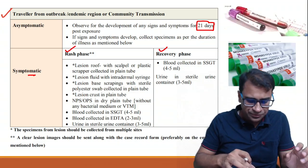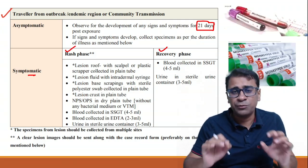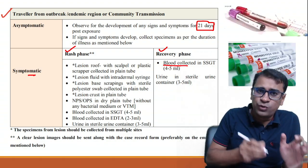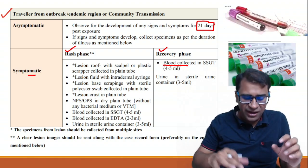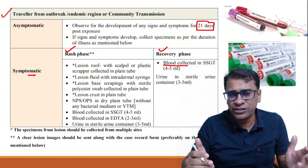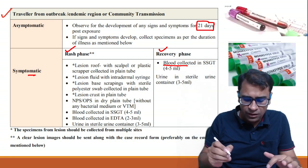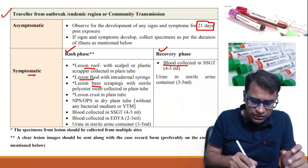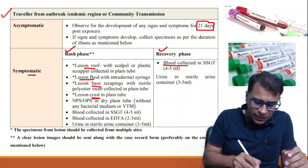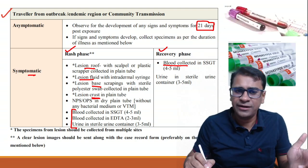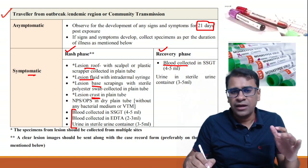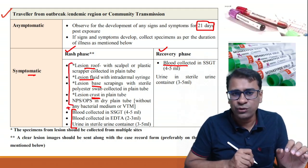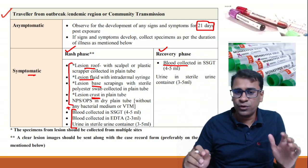In the rash phase, specimens should be taken from the rash only, while in the recovery phase blood can be taken. The rash specimen can be a lesion roof, scrapings taken with a scalpel or plastic scraper, lesion fluid, the base of the lesions, or crusts of the lesions. Blood can be collected in a plain tube or EDTA tube, and urine in a urine container. All these samples — lesion material, blood, and urine — should be collected during the rash phase.